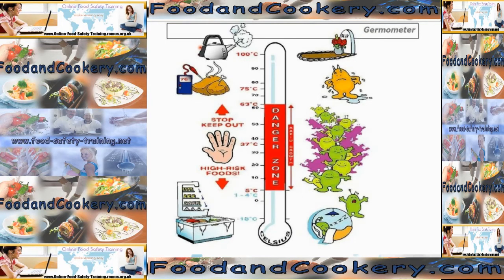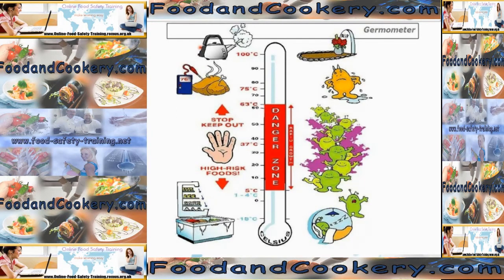Please make some notes on this slide because the temperatures here are very important. This is a thermometer showing what happens to bacteria at certain temperatures. Starting at the bottom, we have minus 18 degrees Celsius — the maximum temperature of commercial or domestic freezers. At this temperature, bacteria will remain dormant; freezing won't kill them but they won't multiply. Fridge or chiller temperatures are 1 to 4 degrees Celsius — again, with a couple of exceptions, bacteria will not multiply. The next set is the temperature danger zone, shown in red, between 5 and 63 degrees Celsius.